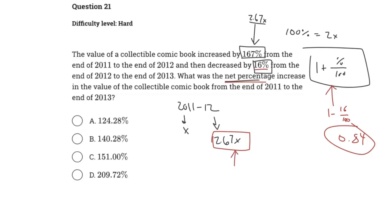We know that the value of 0.84 will be applied to this value, the value we had at the end of 2012. And so we have 0.84 times 2.67x. To find the net percentage here, we just multiply these two values: 0.84 times 2.67 gives us a value of 2.2428. This is not the percentage, it's a scale factor.